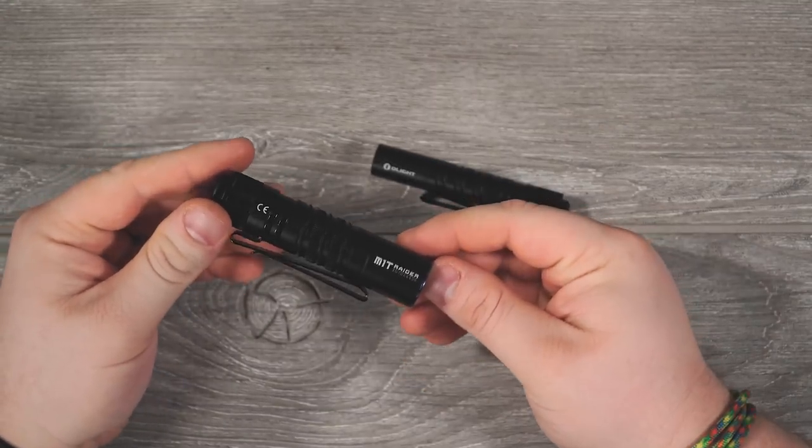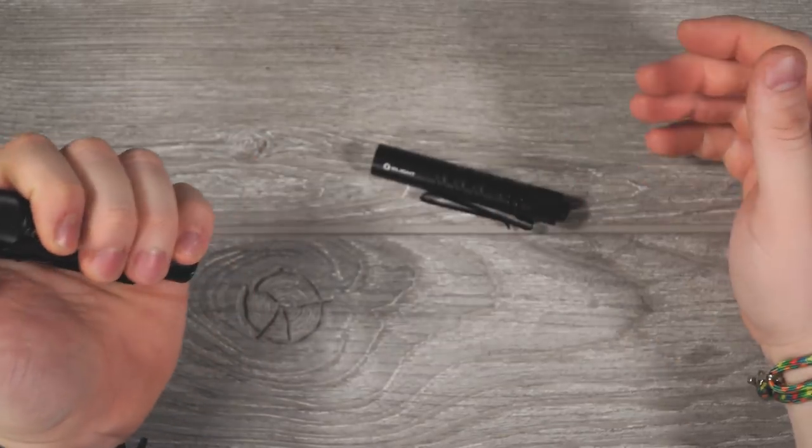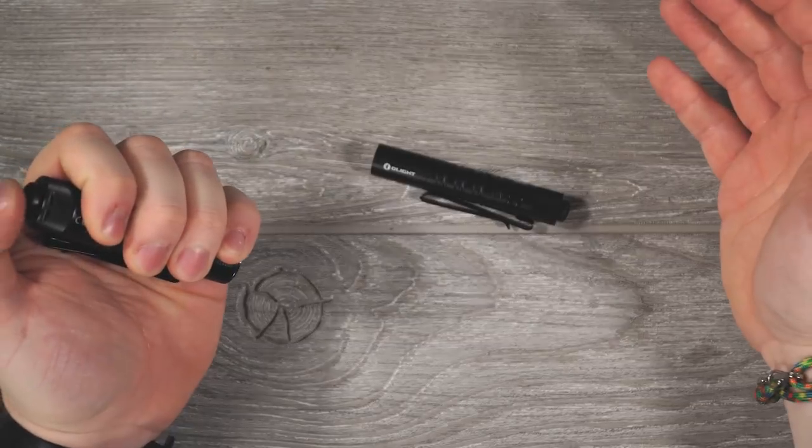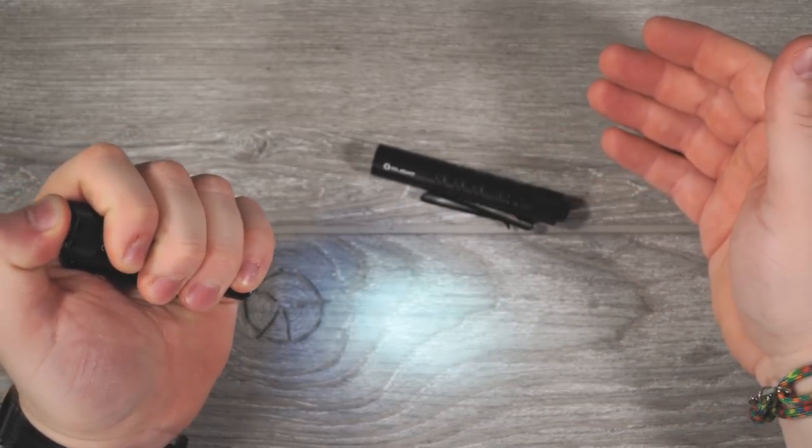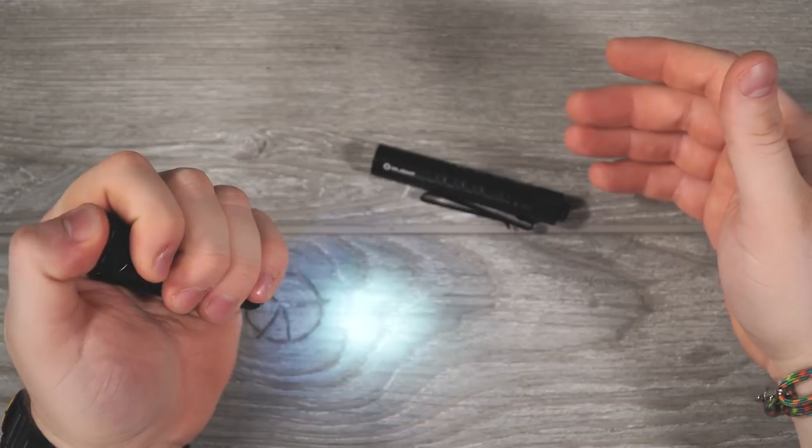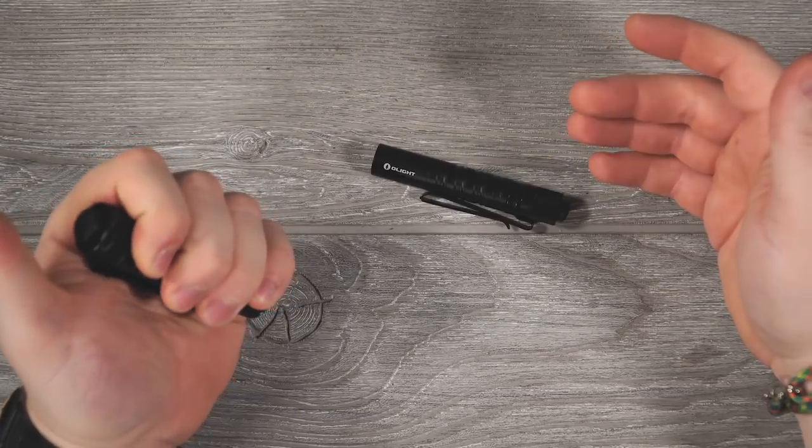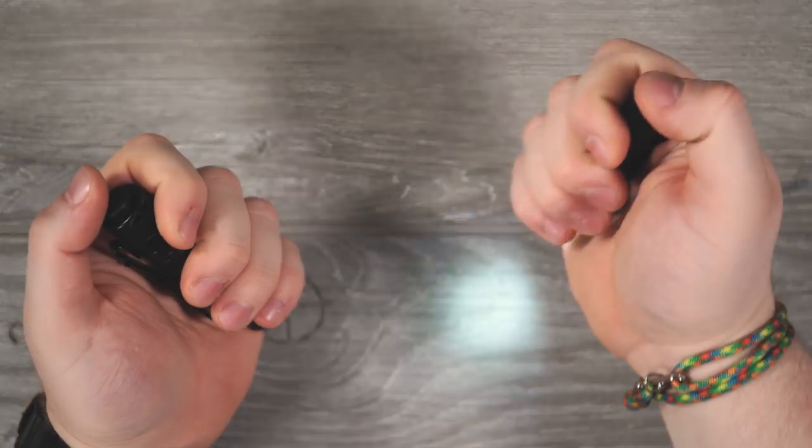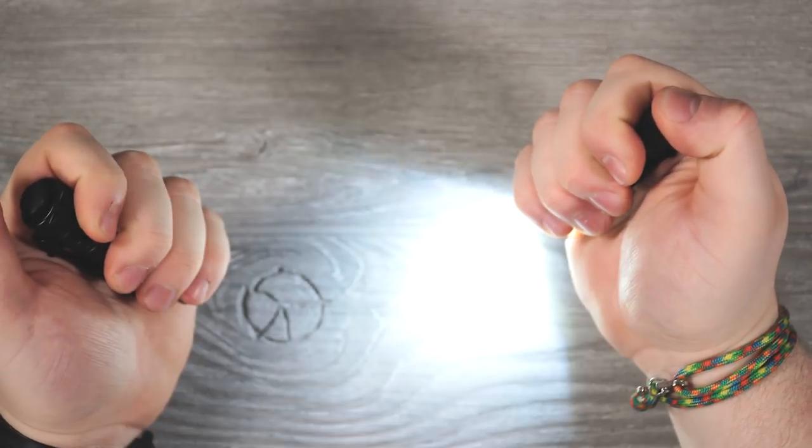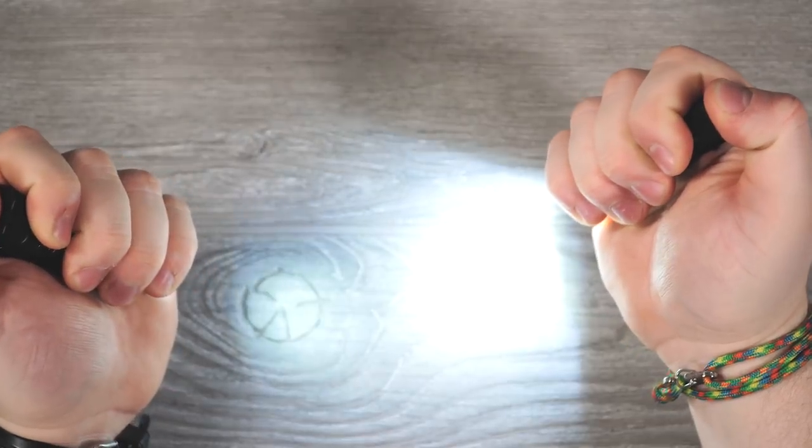The M1T Raider is the opposite of that. The momentary switch, if you just depress it a little bit, you get the high mode, 500 lumens. To get to low mode you have to double press to get the 5 lumens, and then constant on, just fully click on either one to get a constant on. So they literally work in the opposite way: low mode, high mode for the i3T, and high mode first with double press for low mode on the M1T.